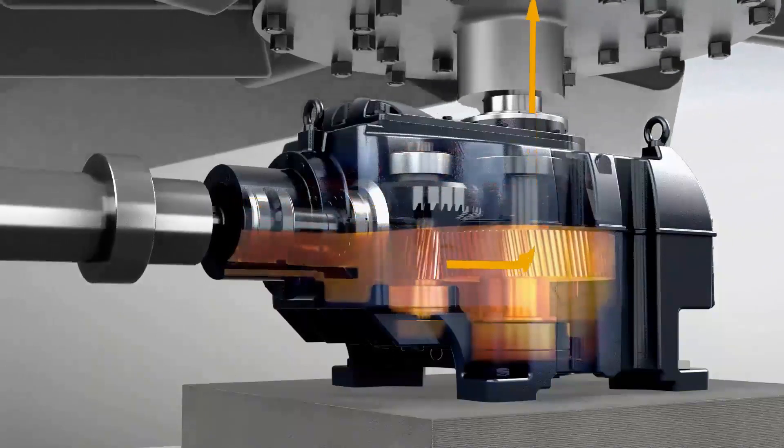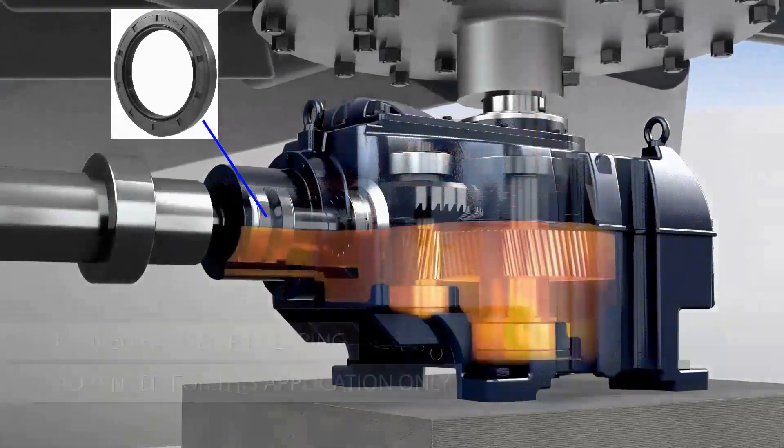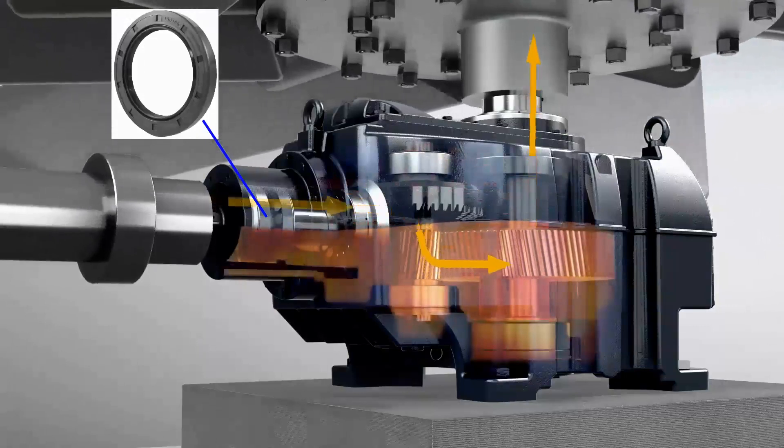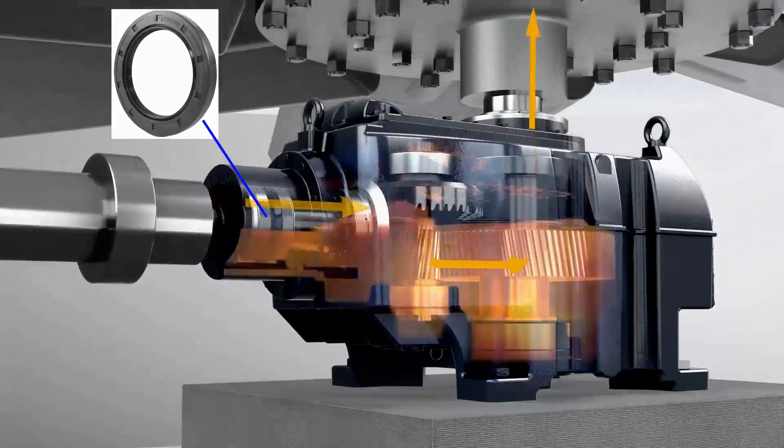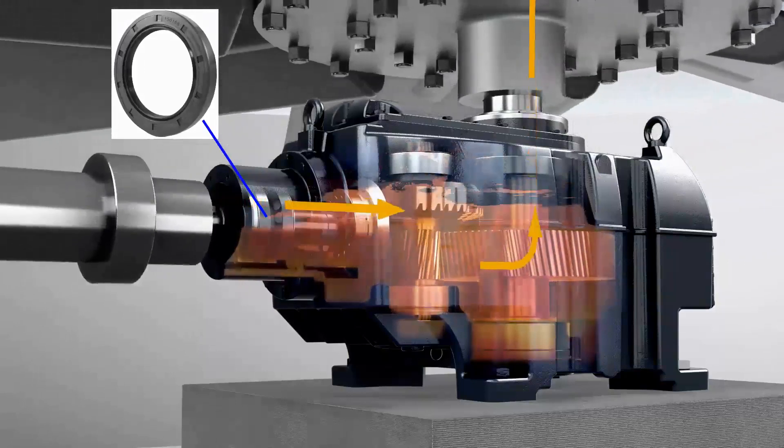The oil seal is one of the components on the machine that serves to prevent leakage of fluid or lubricant through the rotating shaft. Because of that, your engine doesn't wear out, overheat, or get damaged due to lack of lubricant.